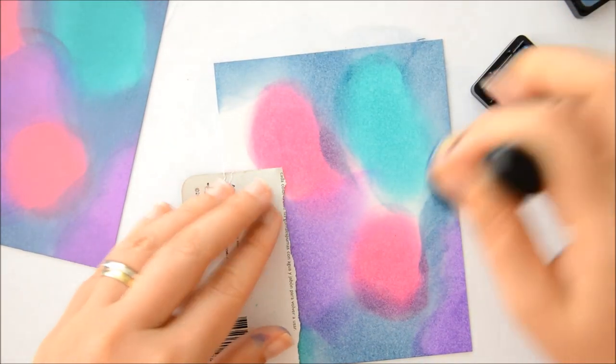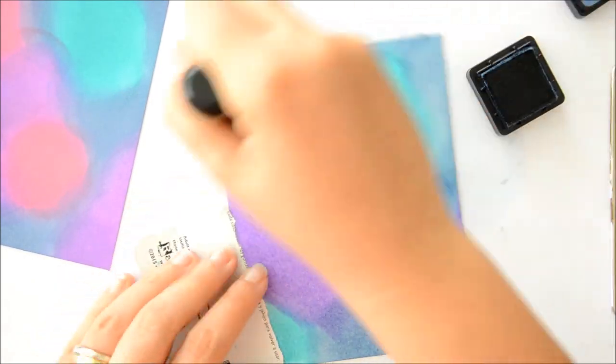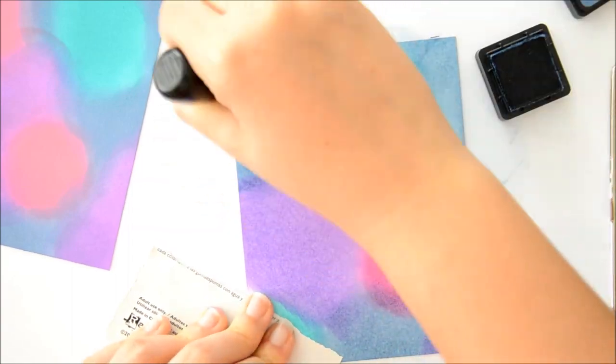This is by Strathmore because it really makes the job much easier. The ink sits on top of the cardstock because it has some kind of coating on top, I guess, and it gives you a little bit of extra time to move the color around and to blend it with the other colors.